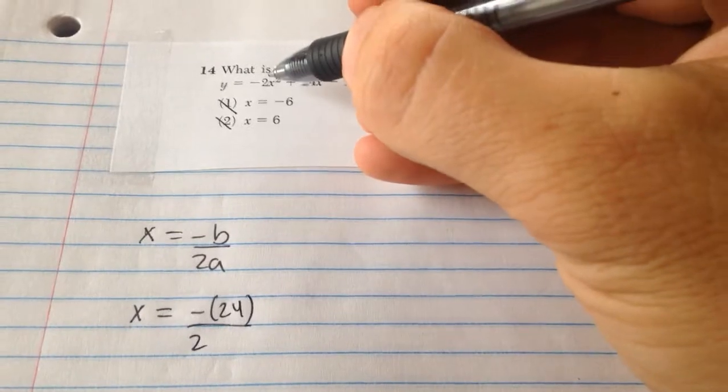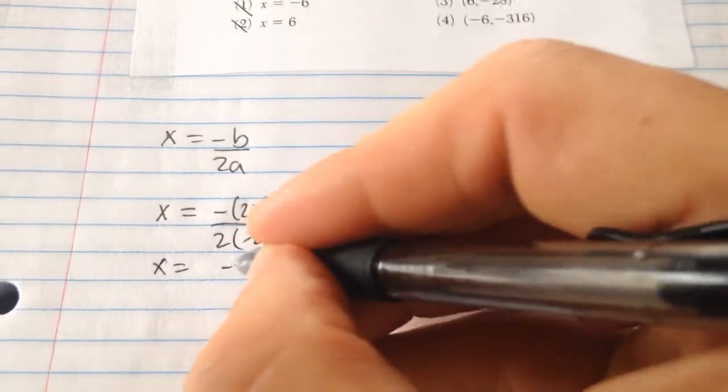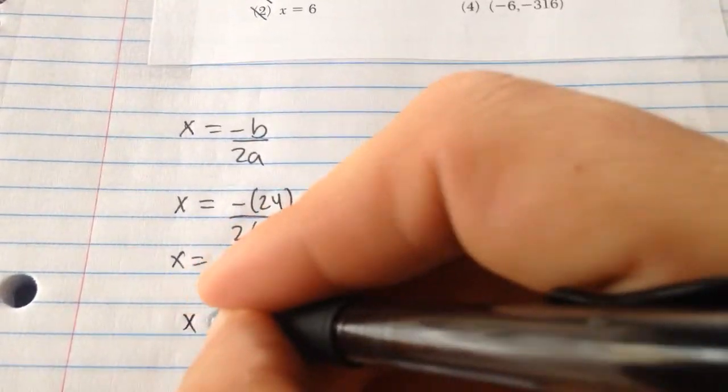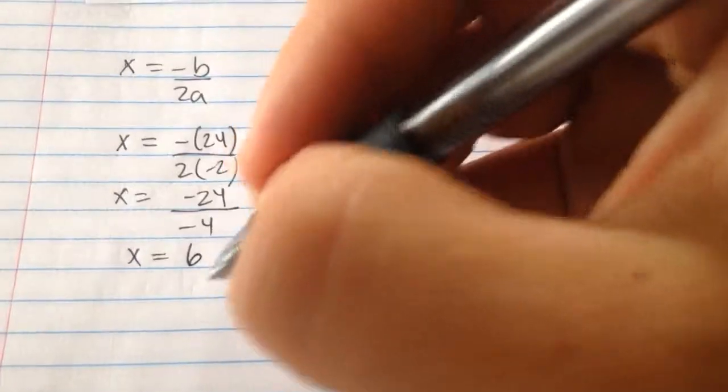2 times the a value, which is negative 2. We get negative 24 divided by negative 4, and you get positive 6. That's the axis of symmetry.